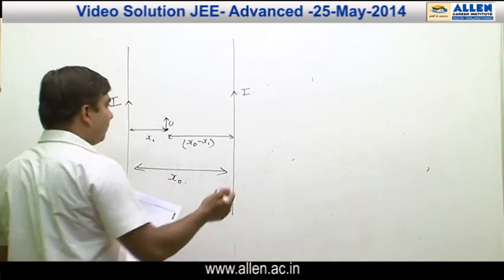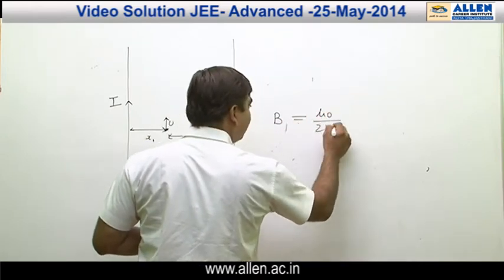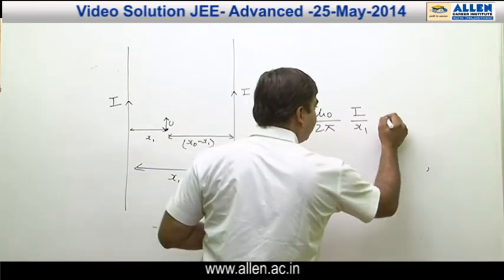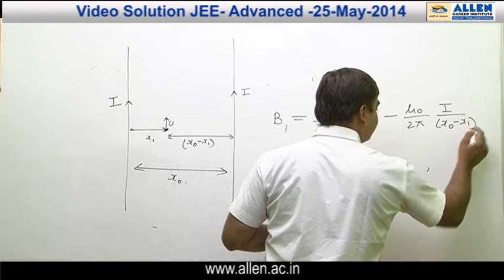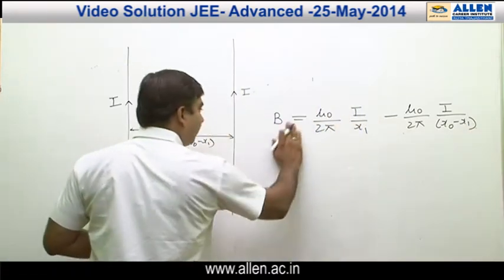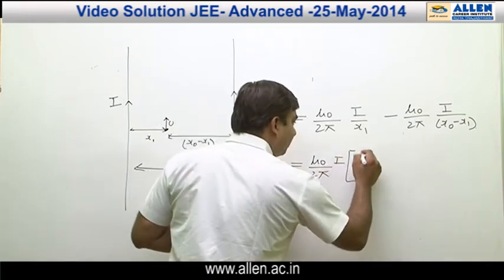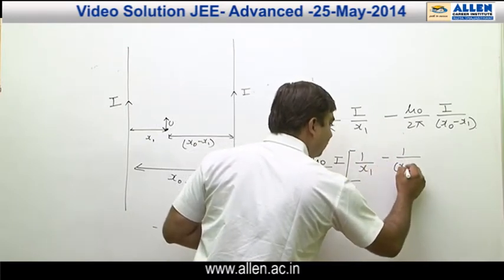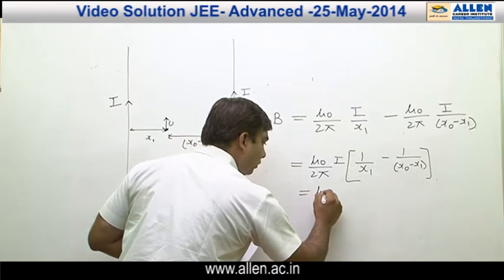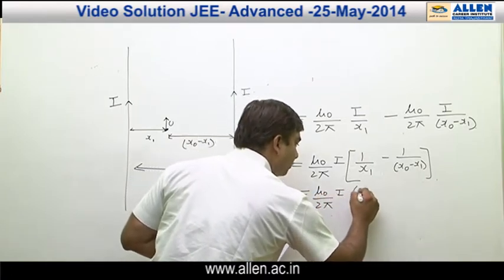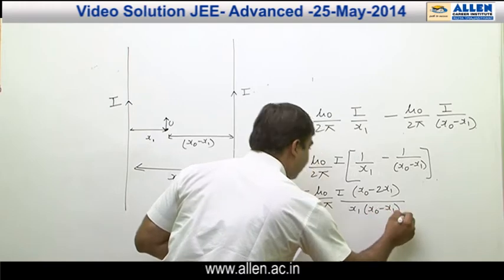Finding the net magnetic field inside the plane of the board, B1 net can be written as mu naught upon 2 pi times i upon x1, minus mu naught upon 2 pi times i upon x naught minus x1. So the magnetic field in this case comes out to be mu naught upon 2 pi times i times (1 by x1 minus 1 by x naught minus x1), which simplifies to mu naught upon 2 pi times i times (x naught minus 2x1) upon x1 into (x naught minus x1).